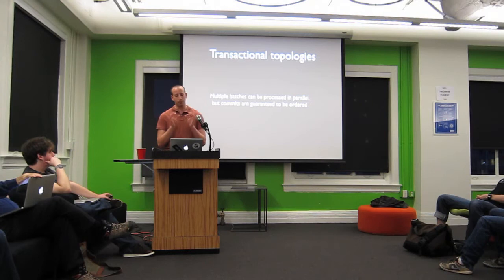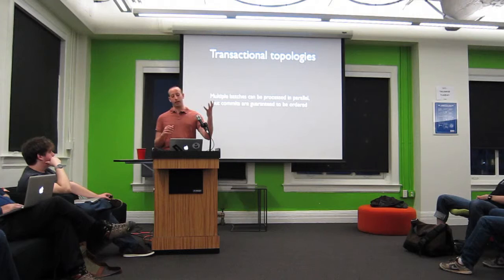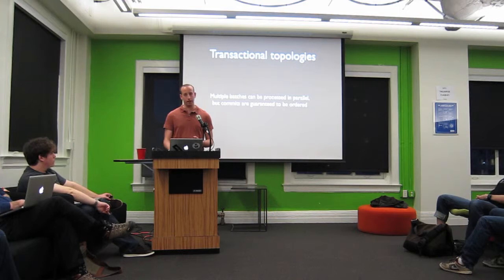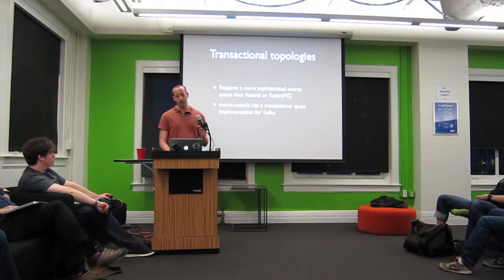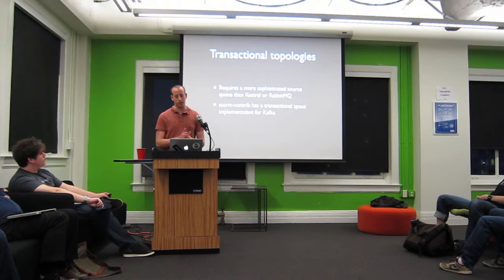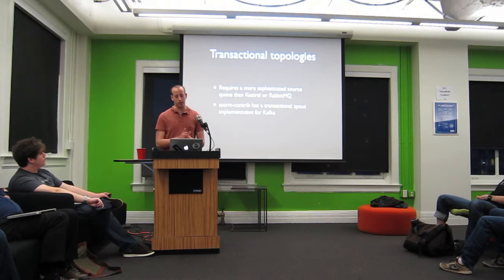One of the cool things about transactional topologies is that you can still process multiple batches in parallel, but your commits are ordered. While you're committing batch one, you can still be doing the processing phase for batches two through ten. This enables you to maximize resource utilization of your cluster. One thing about transactional topologies: it requires a more sophisticated source than something like Kestrel or RabbitMQ. But it turns out Kafka has the perfect semantics for doing this, and there's a project called Storm Contrib which has a transactional spout implementation for Kafka.